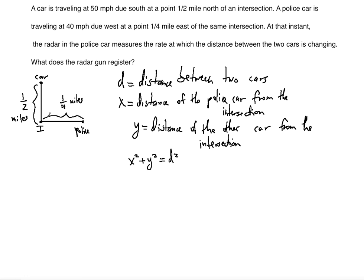Now we differentiate both sides with respect to time, keeping in mind that all variables must be differentiated with respect to t. Using the chain rule, differentiating the left side gives 2x · (dx/dt).